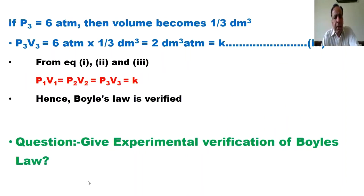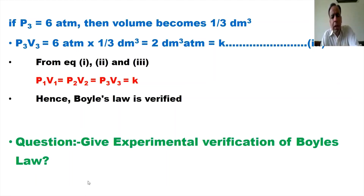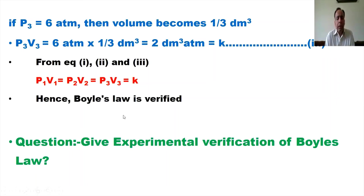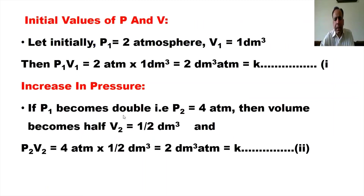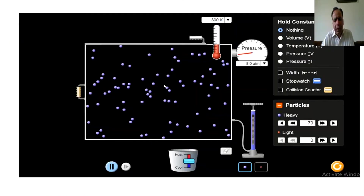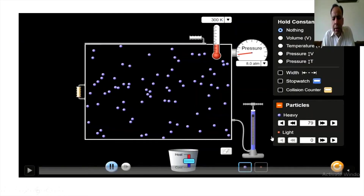Now for the third case, if we increase the pressure further, the volume becomes one-third. Putting the values, the answer is again 2. So P1V1 is equal to P2V2 is equal to P3V3. Since all three are equal to 2, therefore K is the constant of proportionality. Hence, Boyle's Law is verified.